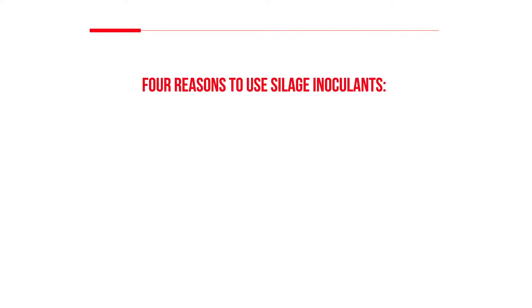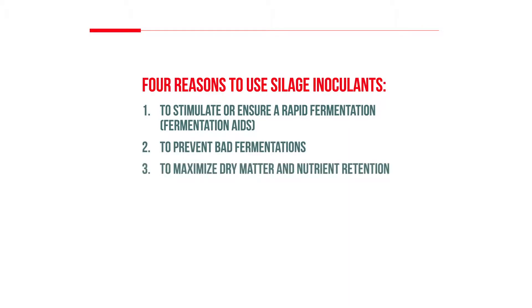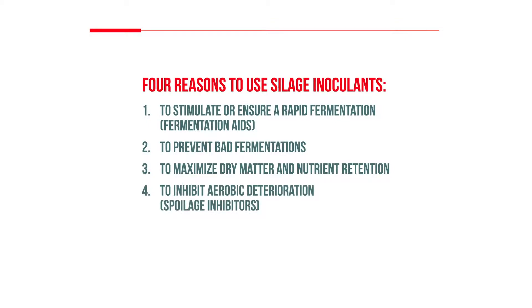Forage inoculants are used for four primary reasons: to stimulate or ensure a rapid fermentation, to prevent bad fermentations, to maximize dry matter and nutrient retention, and to inhibit aerobic deterioration.